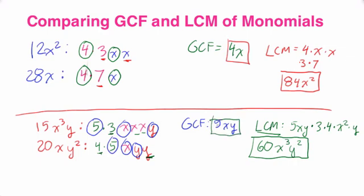And my greatest common factor is a 5xy. So I hope this highlighted the differences for you and the similarities in finding these two techniques, the greatest common factor and the least common multiple of monomials.